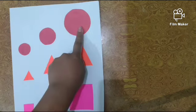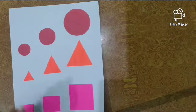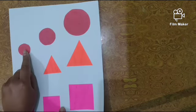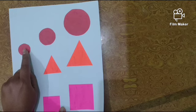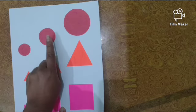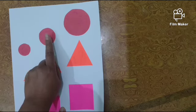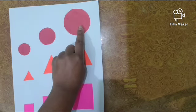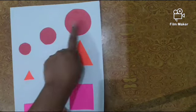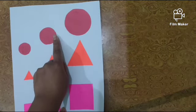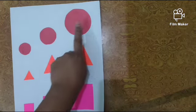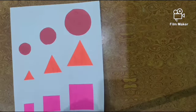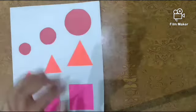And size ke according, yye sabse chhota circle hai aapka. Isse thoda sa bada circle ye hai. And sabse bada circle hamaara ye hai. So size ho gaya. Three size ho gaya: small, big, very big. And color hamaara ho gaya red color.